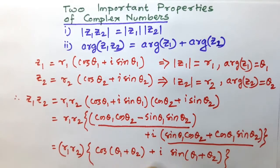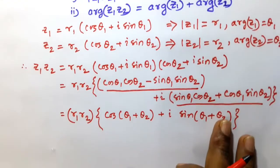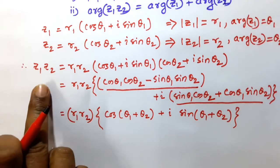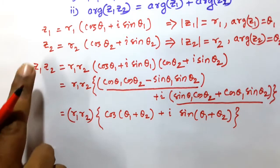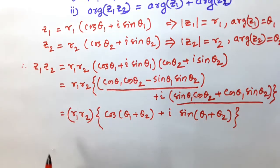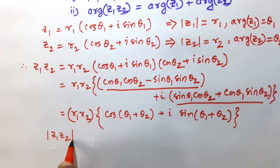So this is a complex number in polar form. So that the complex number Z1 Z2, after multiplication, this is another complex number Z1 into Z2. So modulus of Z1 Z2 is equal to this one, which is R1 into R2.